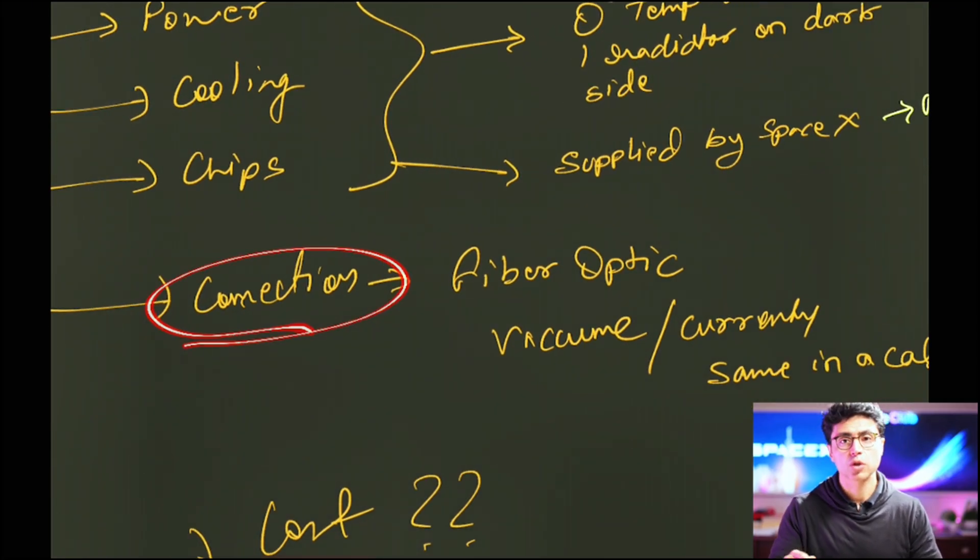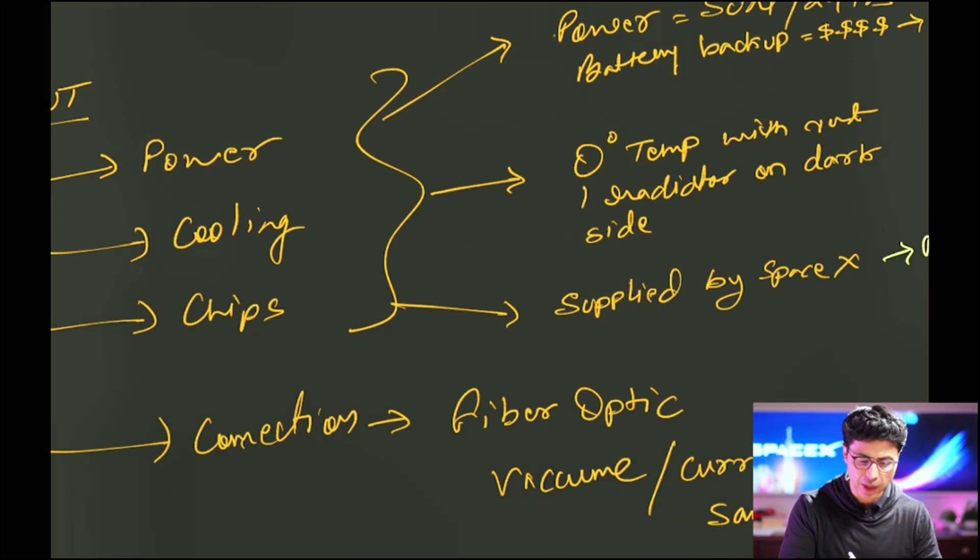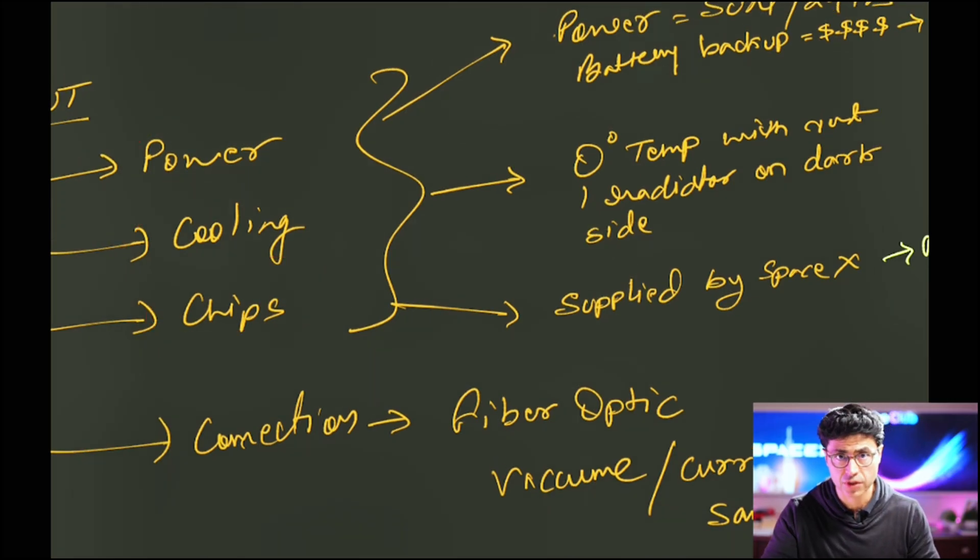Then let's talk about connection. So how are data centers connected right now? Data centers are connected through vacuum sealed fiber optic cables running between one data center to the other data center. What happens in space? There is no vacuum required and those connections can be made laser from one satellite to the other satellite uninterrupted. So now we have the connection between the satellites. We have the free power. We have the free cooling and chips is the one that is supplied from Earth basically in those data centers.